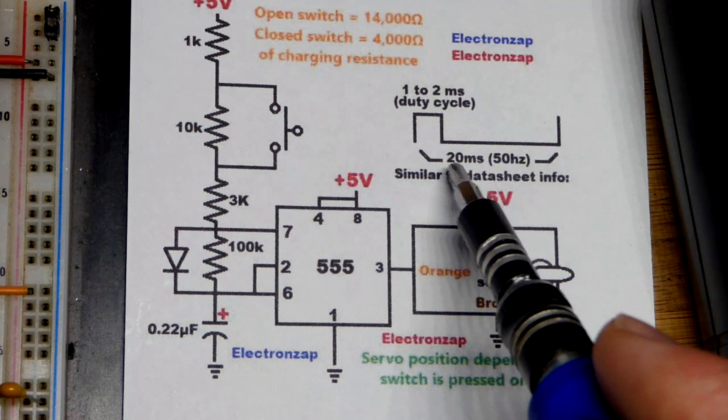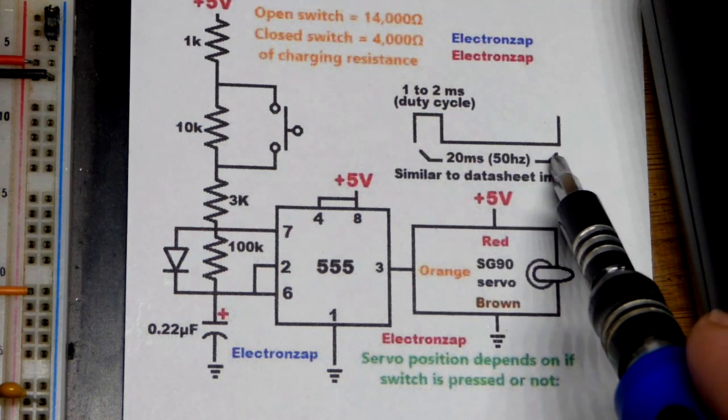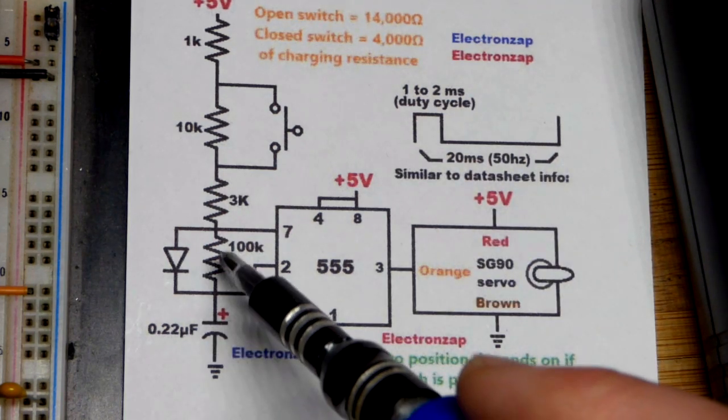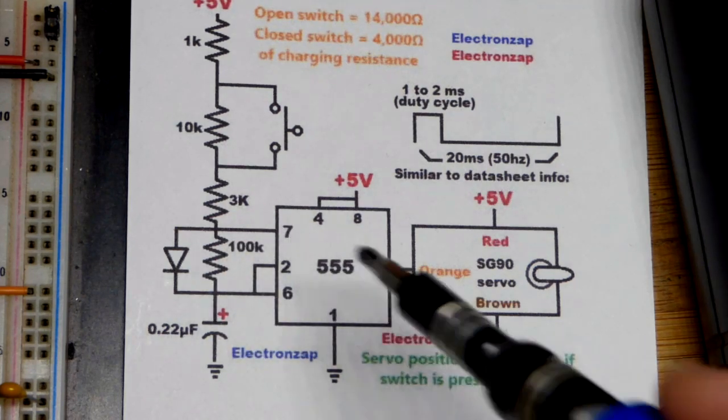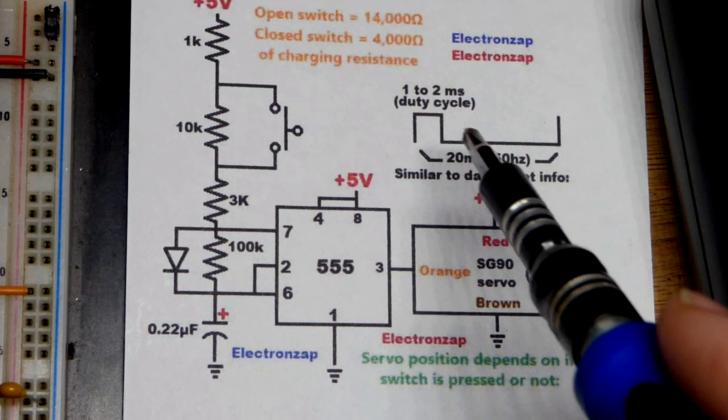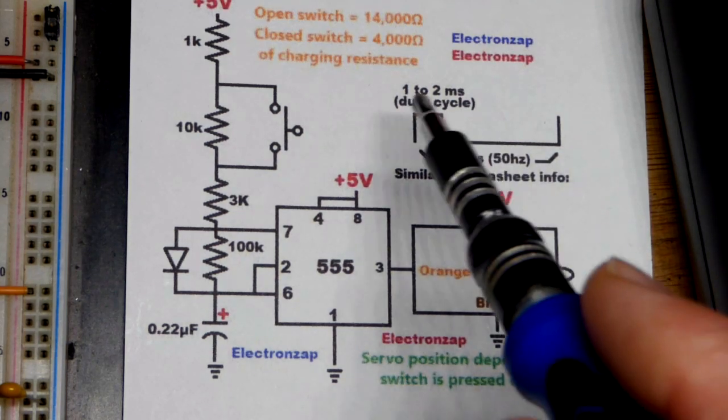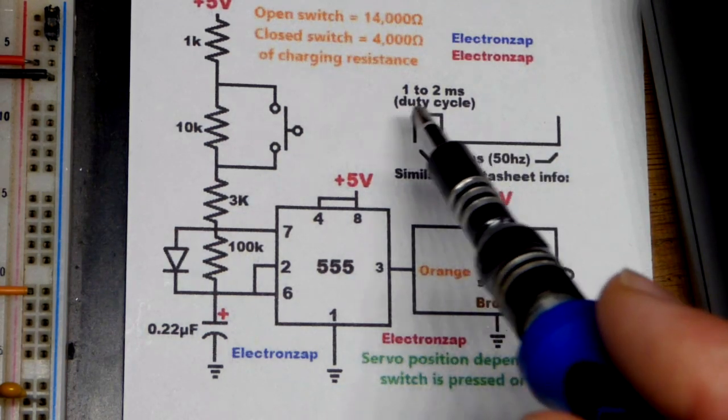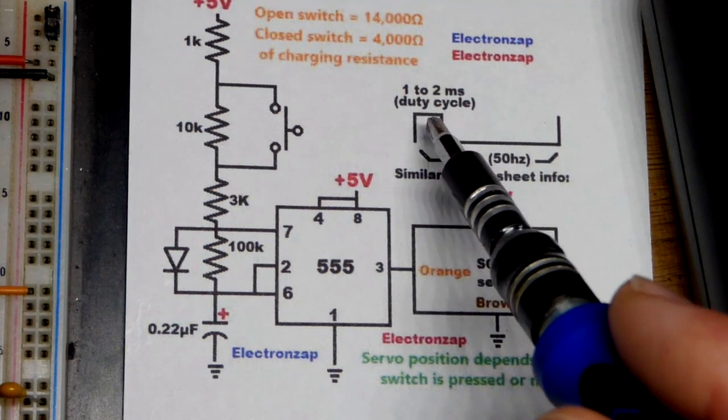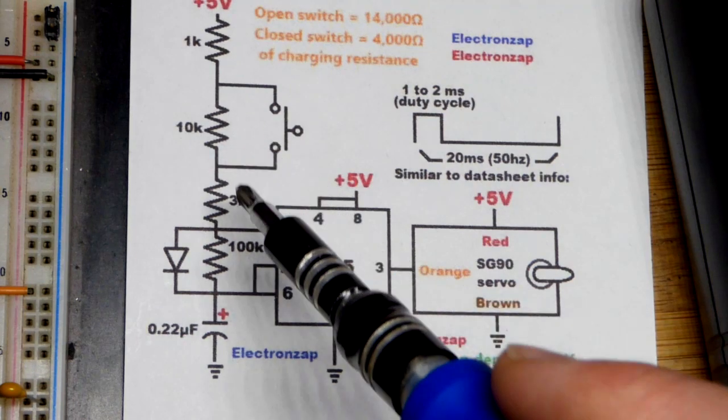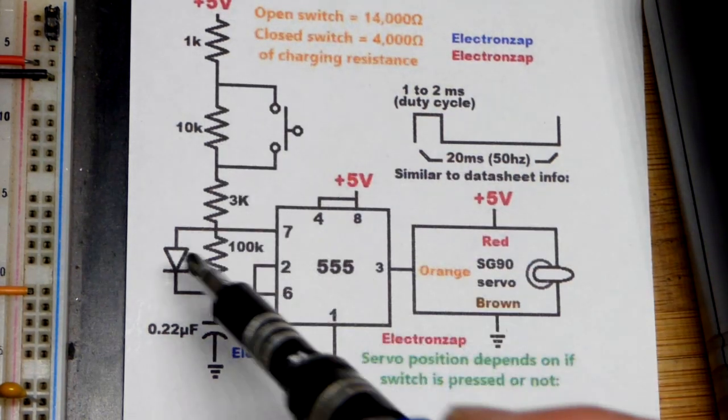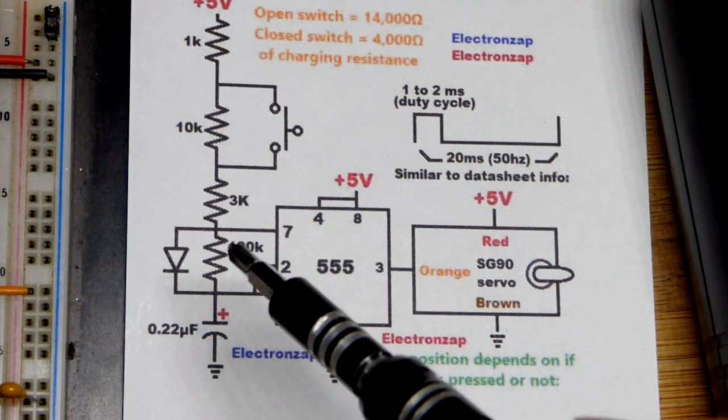A 555 timer can easily do that, and mostly the output is low, as you can see there. So we have a higher value resistor for discharging the capacitor down to one-third of the supply voltage, at which time the output is low. Now, for it being high, we have a much shorter period of time. We want about one to two milliseconds, approximately.